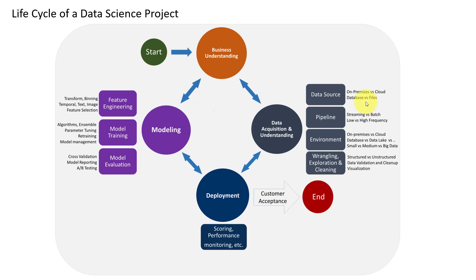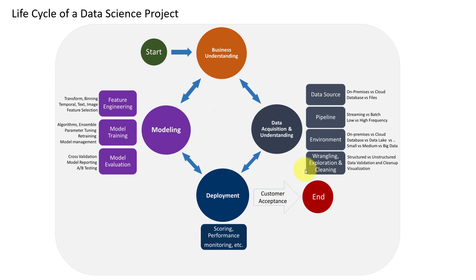Once the data is in the right format, the important next step is Exploratory Data Analysis, or EDA. In EDA, we look at missing values in the data, perform feature engineering, and do feature selection. Missing values occur when not all data is present in the dataset. We need to handle those missing values using central tendencies like mean, median, or mode.